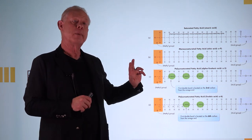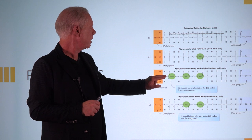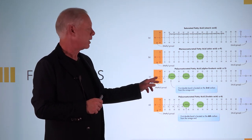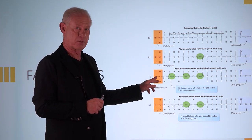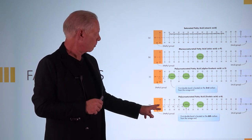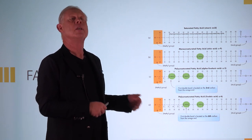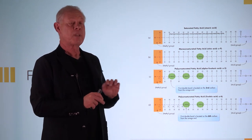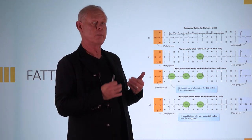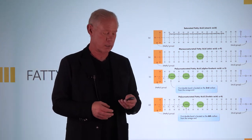So why is it called omega-3? It's one, two, three carbons — the very first double bond is three carbons from the end, or the methyl group, so it's omega-3. Omega-6 is six carbons away from the methyl group. That's all there is to it — nothing else fancy. It's just where that very first double bond occurs.